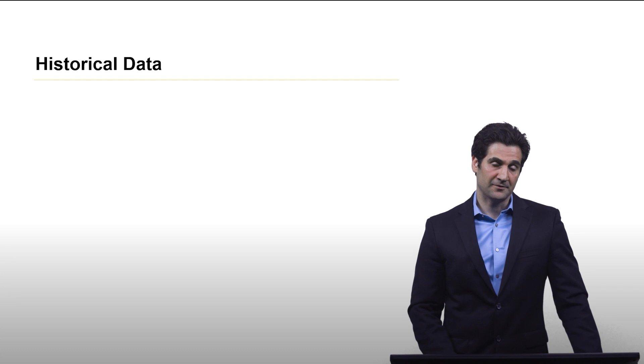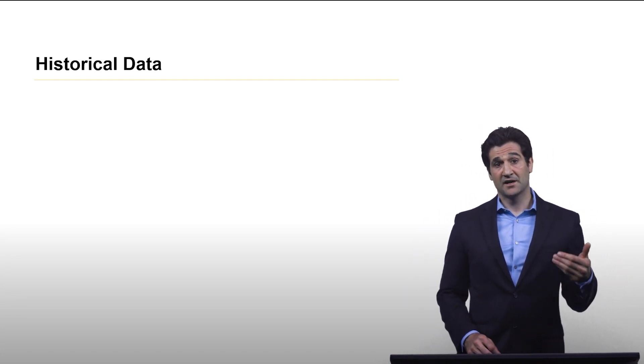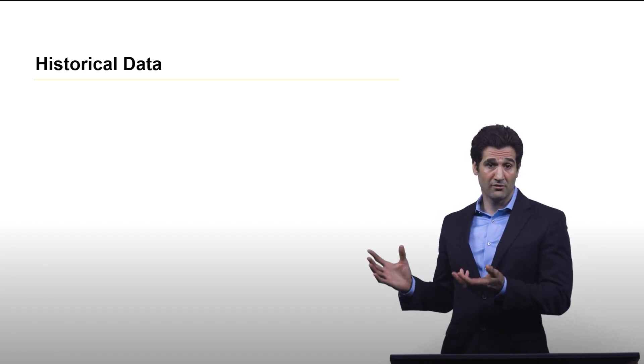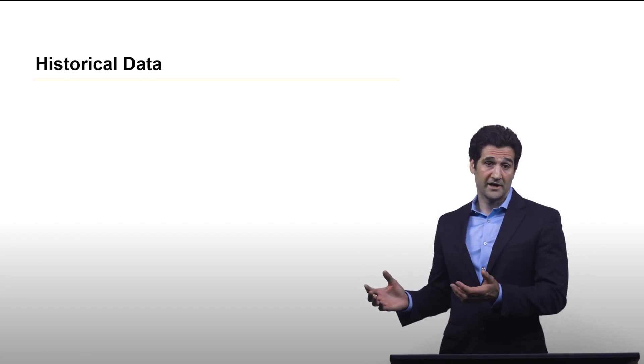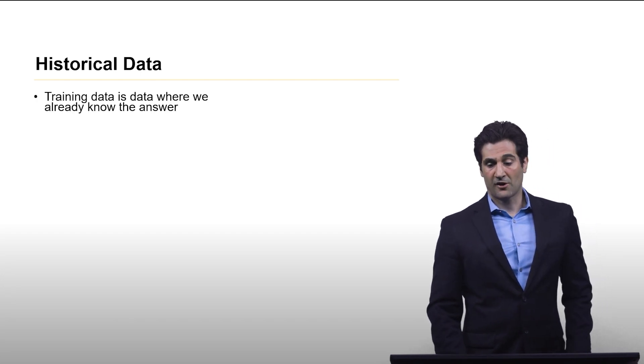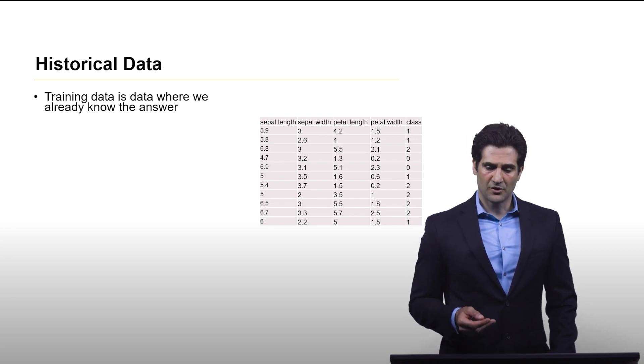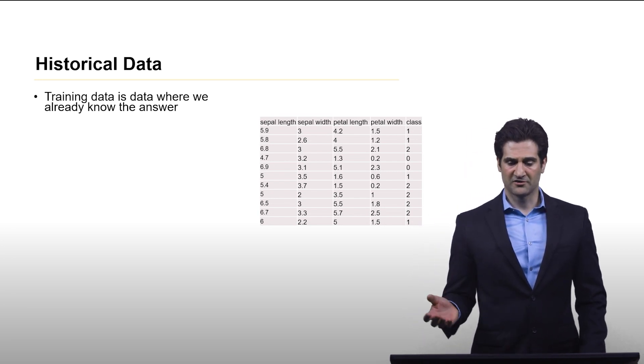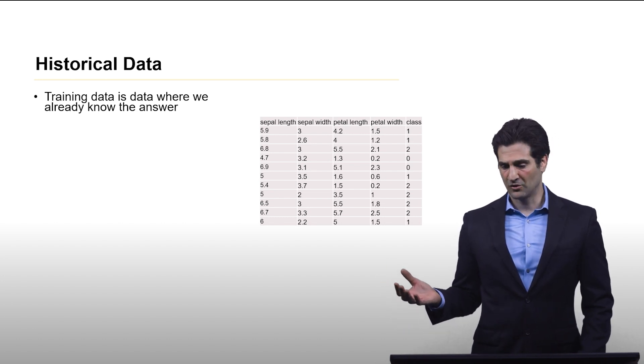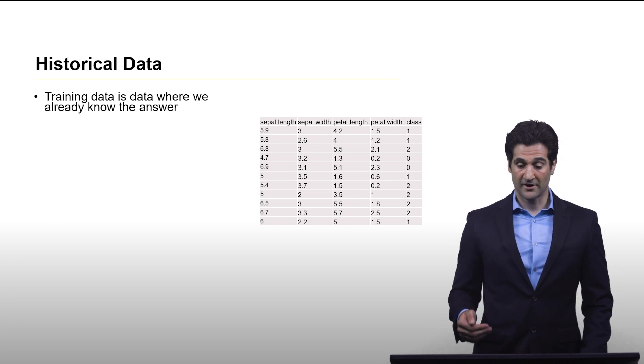So, historical data. As you saw in the last slide, having a supervised model is, it's very important to have data where you already know what the right answer is. For our iris dataset, here's an example of that. We have four columns of measurements, and then we have a column called class, which is simply a numeric code for the species of iris for that given row.